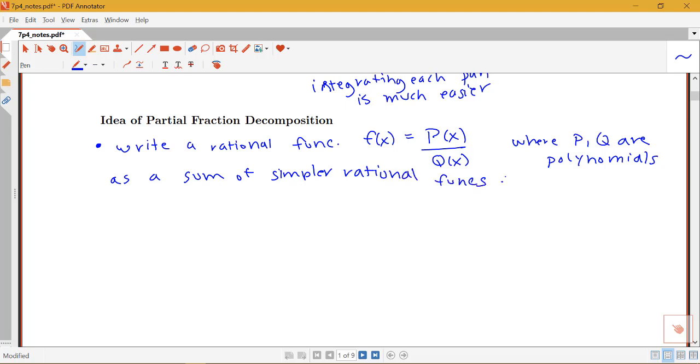So the question is, can we always do this? Are there certain situations when we can do this? So when can we do this breakdown? So we're going to be able to write a rational function as a sum of some simpler rational functions if the degree of the numerator, the degree of p, is less than the degree of the denominator.